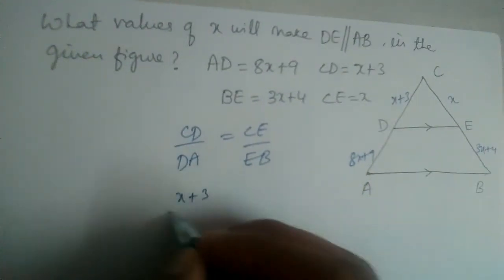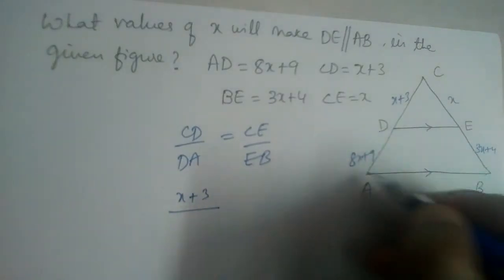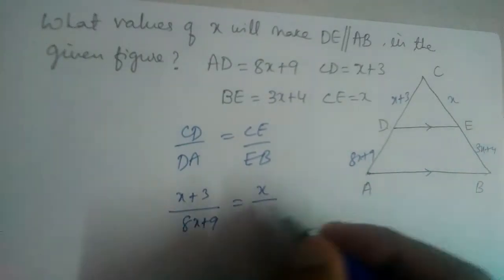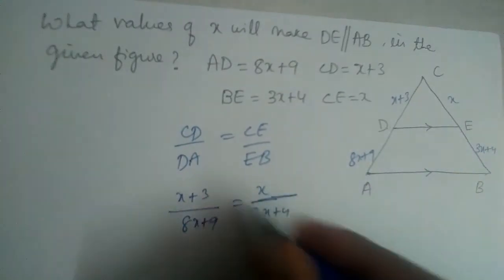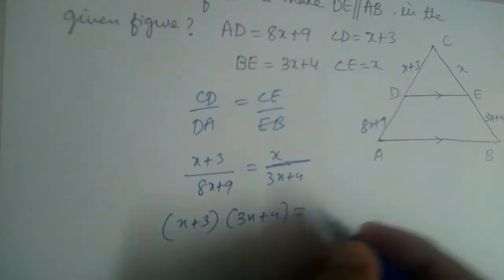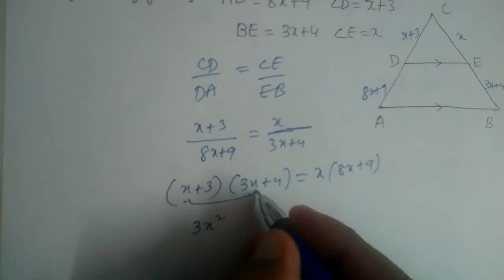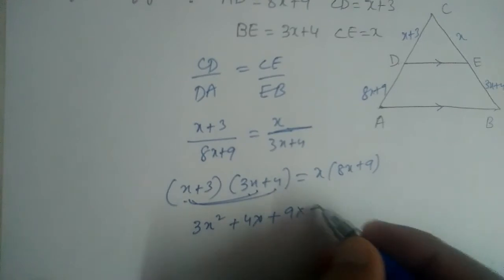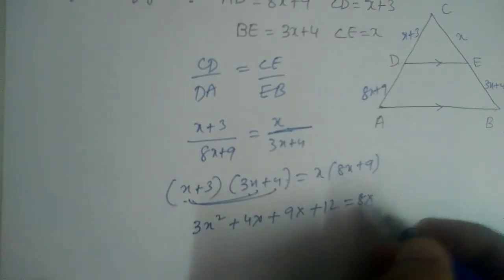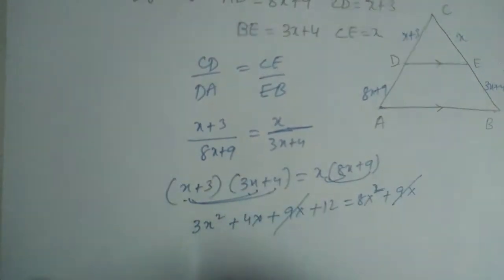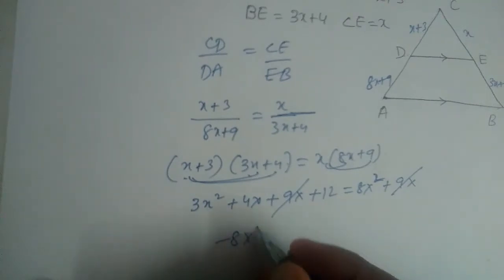CD is (x + 3) divided by DA (8x + 9), equal to CE which is x divided by (3x + 4). Cross multiplying: (x + 3)(3x + 4) = x(8x + 9). Expanding the left side: 3x² + 4x + 9x + 12, and the right side: 8x² + 9x.